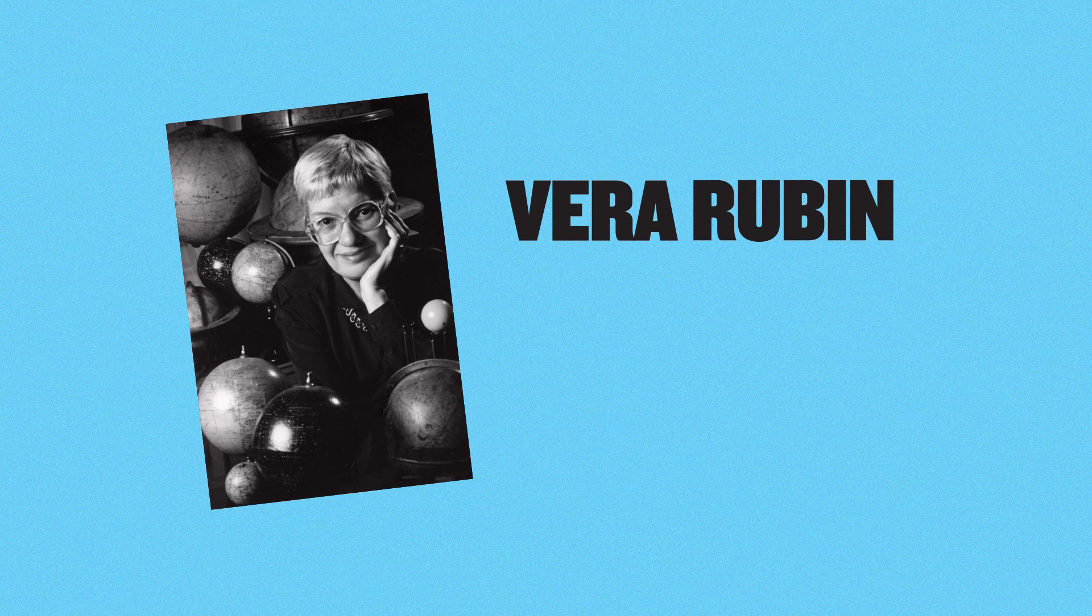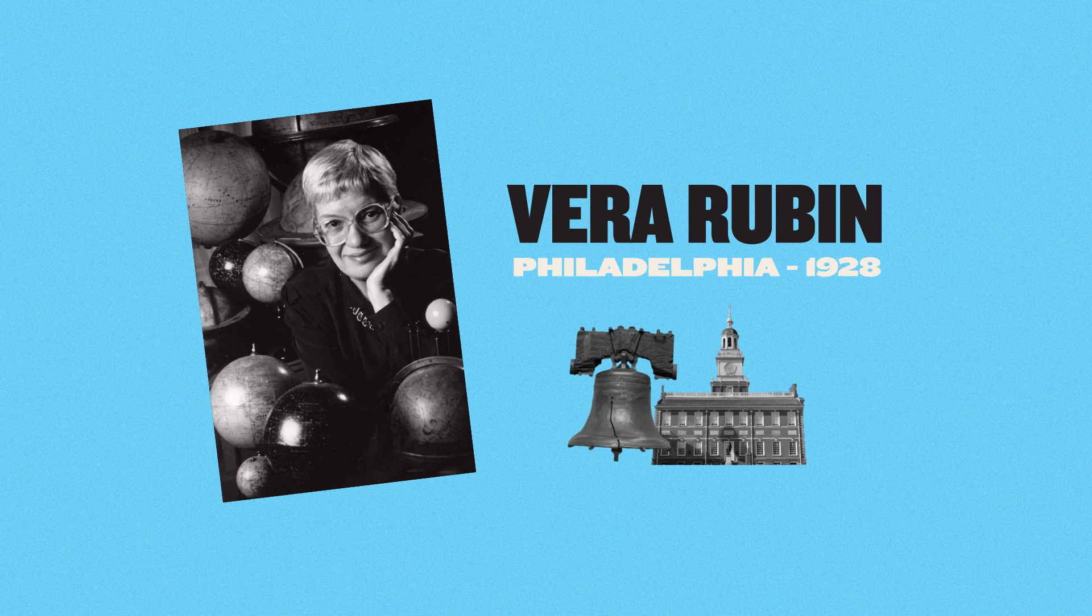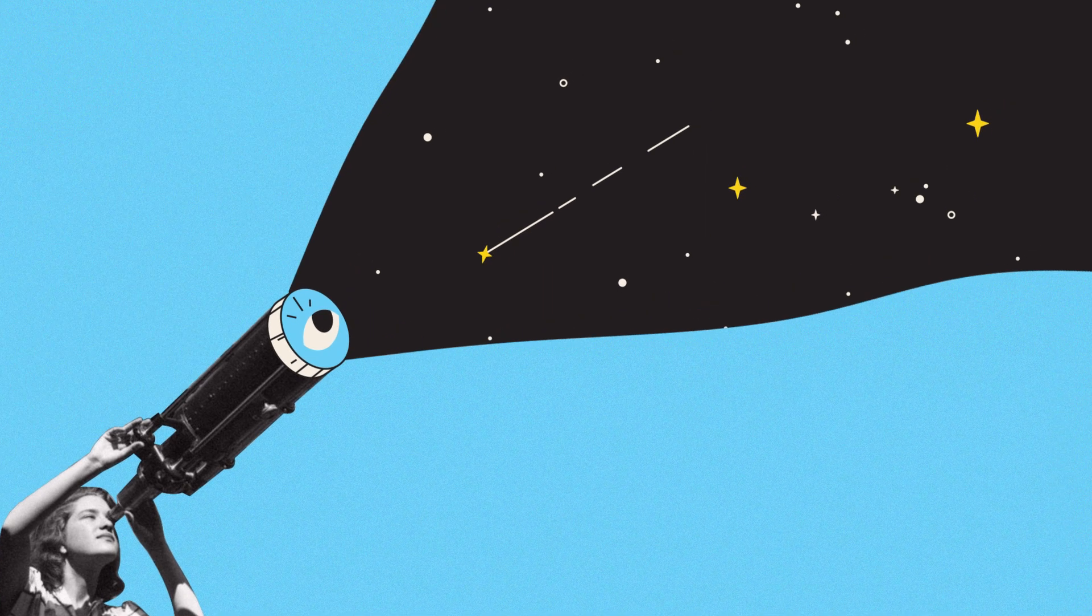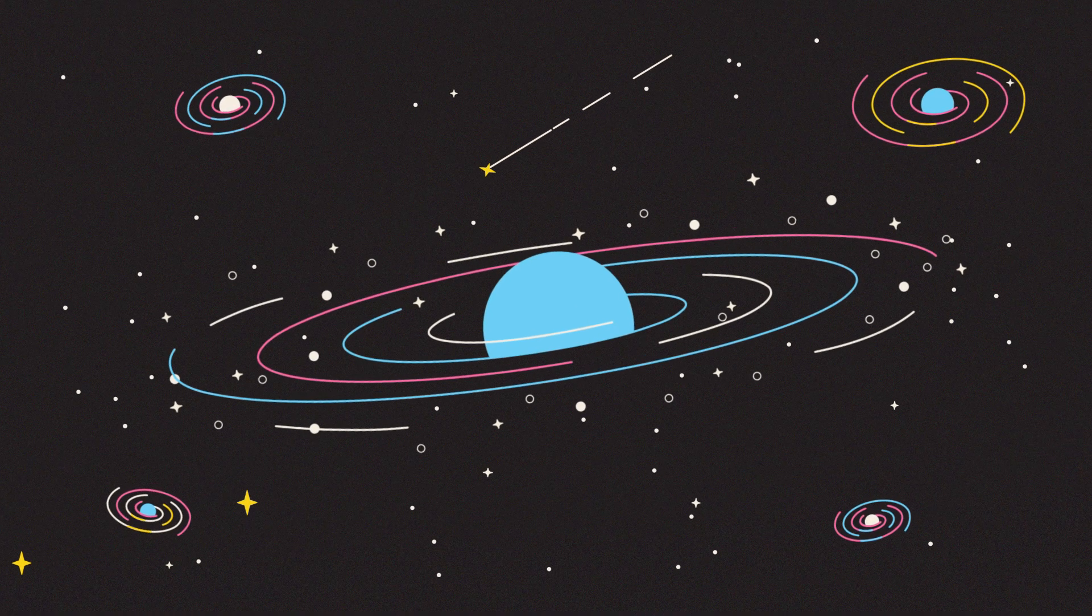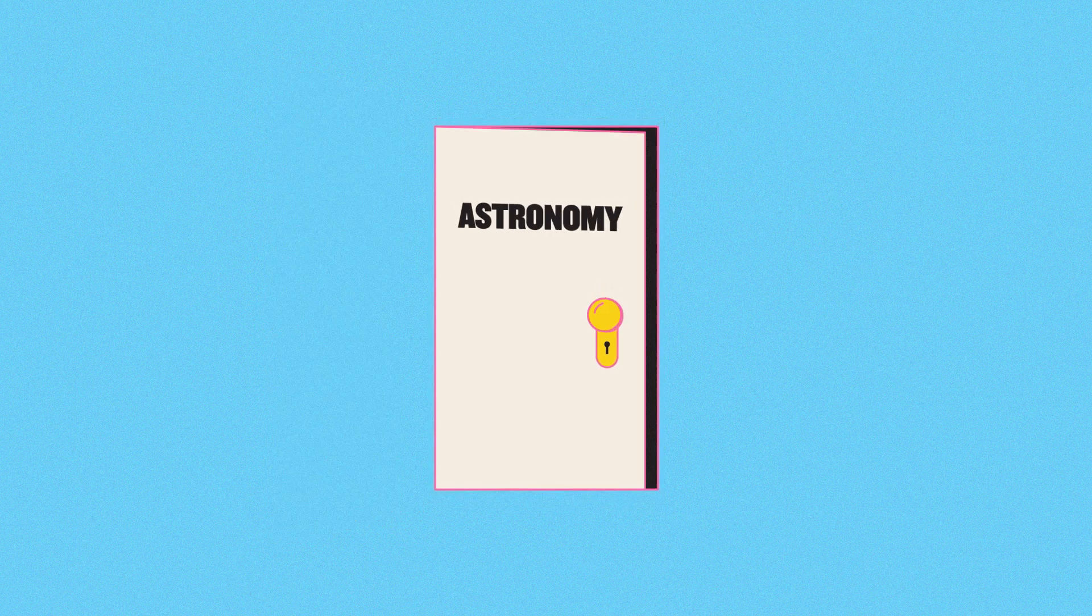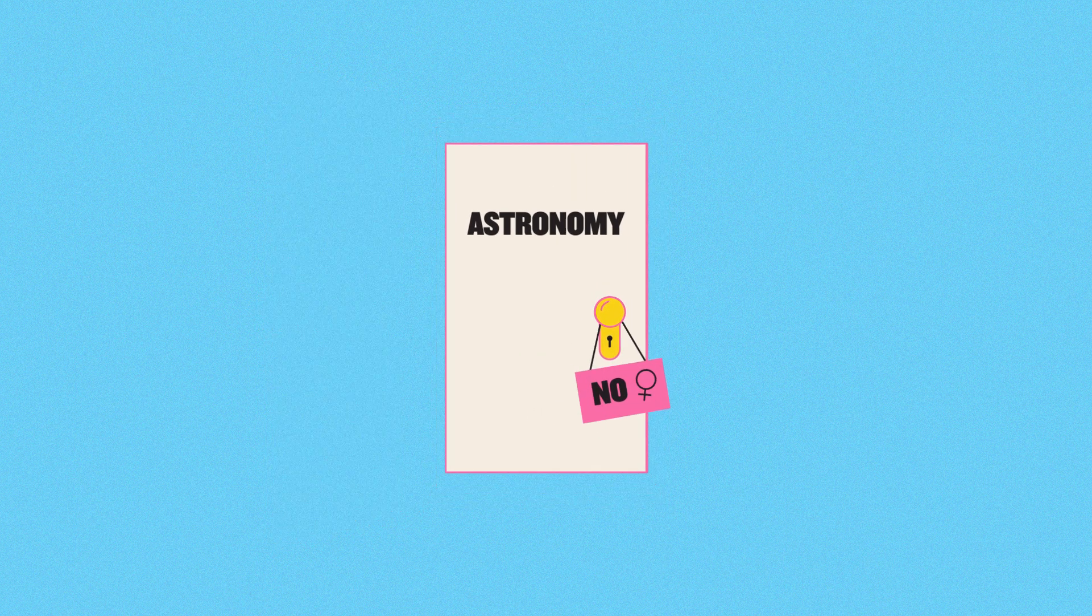Take the work of Vera Rubin. Born in Philadelphia in 1928, as a child Vera loved stargazing, which in due course led her into astronomy. Unfortunately, this field turned out to be a lot less than welcoming, which caused problems throughout her career.